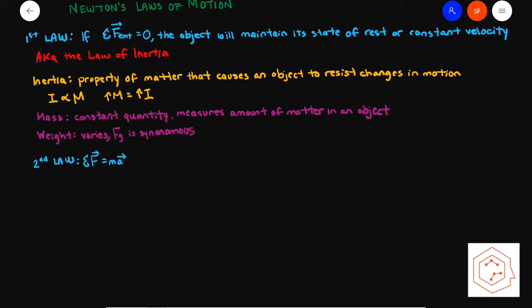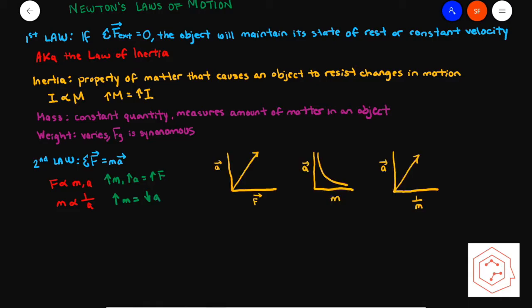Newton's second law is F equals MA, meaning the external net force equals the mass times the acceleration of the object. F is directly proportional to both M and A, but M and A are inversely proportional to each other. So if one factor increases, force increases as well. Whereas for a constant force, if you increase the mass, acceleration must decrease.